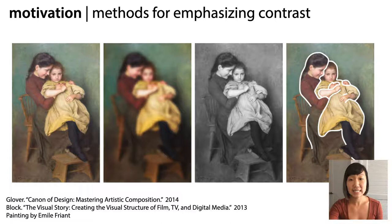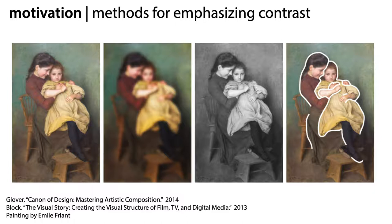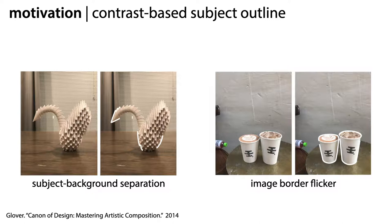Photographers recommend a number of methods to be able to more easily see the contrast in an image. For example, they recommend squinting at the image to see a blurred and higher contrast version, or looking at the image in grayscale to focus on contrast without aspects of color. On the right, the photographer draws a line around the subject. Areas where contrast is maybe too low between the subject and background are shown as gaps.